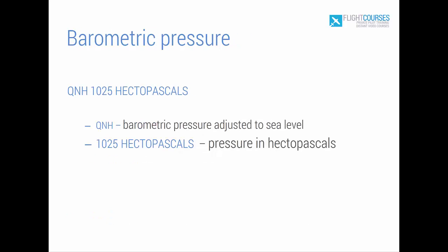Next comes barometric pressure — the air pressure at the terminal zone. Barometric pressure is given as QNH, which is pressure adjusted to sea level. It is a special Q code. In our example we hear 'one zero two five' — this is the pressure in hectopascals, which is our unit of measurement. Other countries may use different units of measurement.